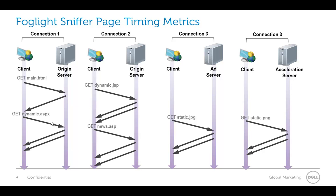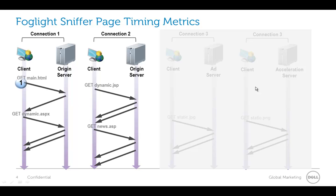This is a brief review from the first section. When you have a page, all these connections are set up — connections to the origin server. It's not unusual to have maybe 20 TCP connections going to the origin server just to serve a single page, and then you'll have third party connections to ad servers and acceleration servers. What we're really looking to do is measure the time from one to four, the end-to-end time for this page. In the sniffer you don't see the timing of the third party components, but you do see the timing of all the things that come back to origin.